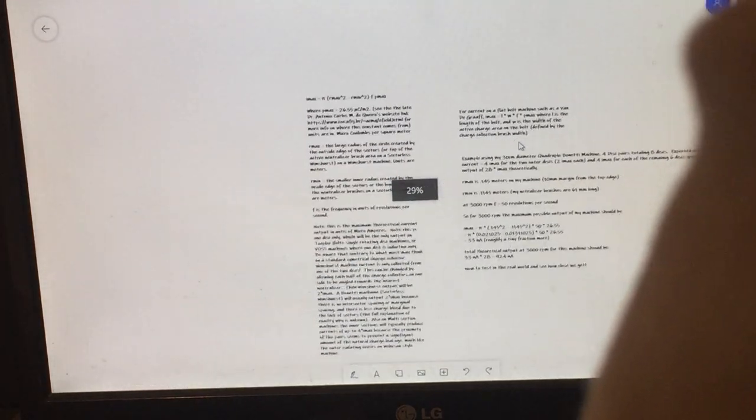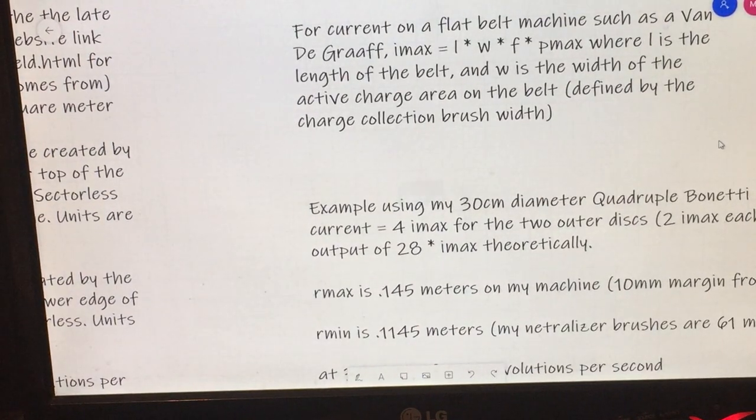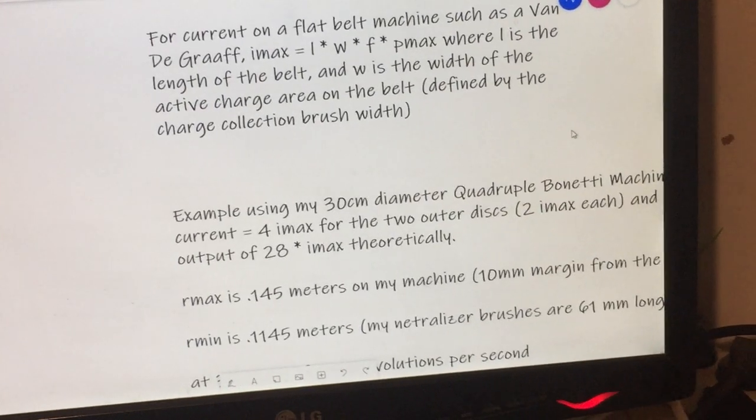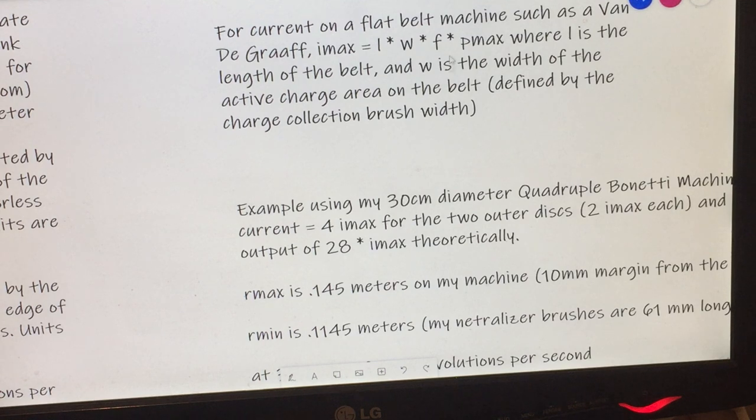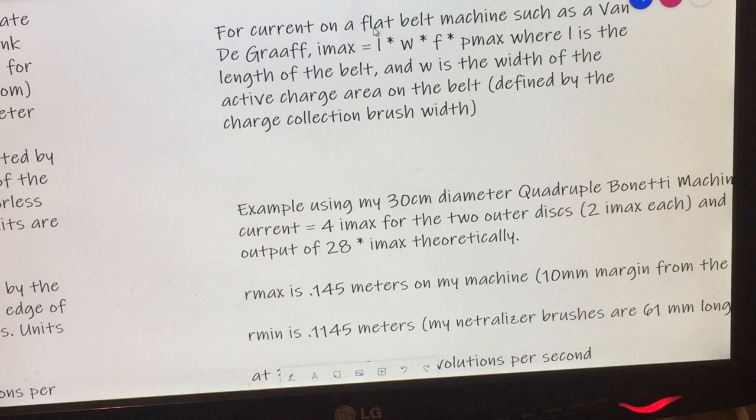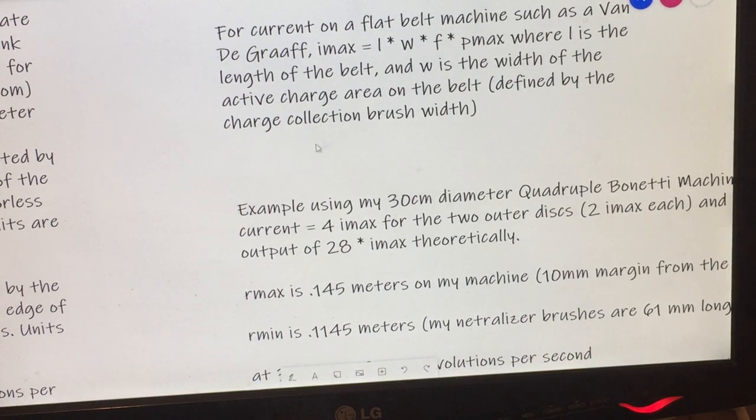And again, here I talk about the current on a flat belt machine, a Van de Graaff. And I talk about how the formula changes. As you notice, the only thing that changes in the formula is that pi r squared calculation becomes just a length times width calculation because you're looking at a flat belt only.